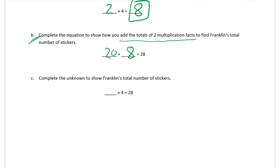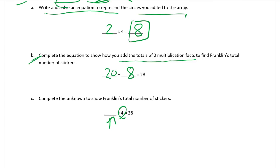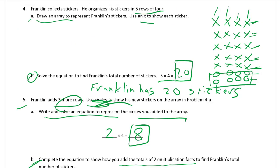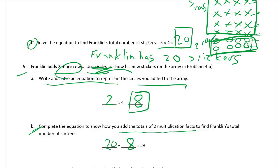Finally, part C: complete the unknown to show Franklin's total number of stickers. How many fours is it? We can count: one, two, three, four, five, six, seven fours. We could also think of it as the first five fours, and then two more rows — that's seven rows of four for twenty-eight. We could do it that way too.